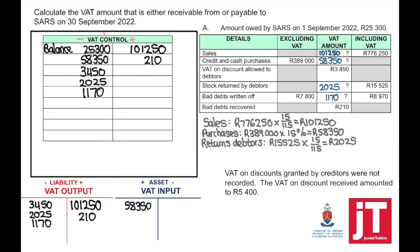Now we need to look at the additional transactions. VAT on discounts granted by creditors were not recorded. The VAT on discount received amounted to R5,400 — they provided the VAT amount, so there's no calculation involved. VAT on discounts granted by creditors means we need to adjust our VAT input: VAT input will be credited. If VAT input is credited, the VAT control account will be credited — but this will have a positive effect on the amount payable to SARS.